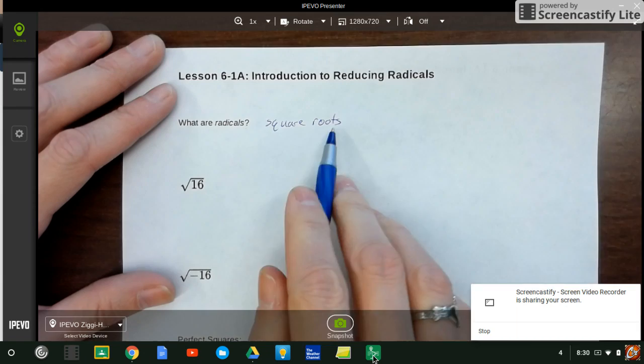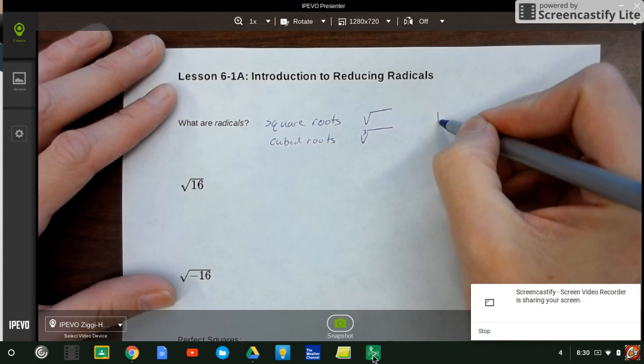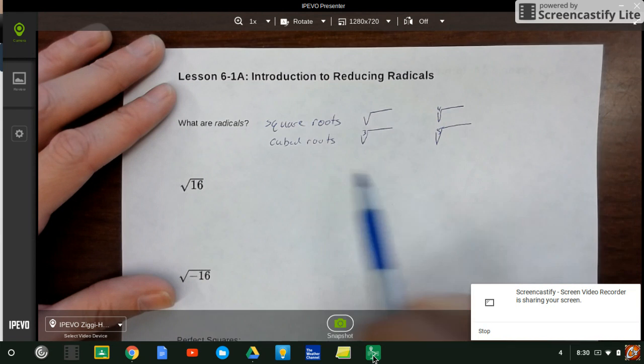What are radicals? You probably know radicals better as square roots. They're not the only thing. There's also cubed roots, which we're not going to go into, but any of these root powers are what we mean by radicals - fourth root, fifth root, anything like that.